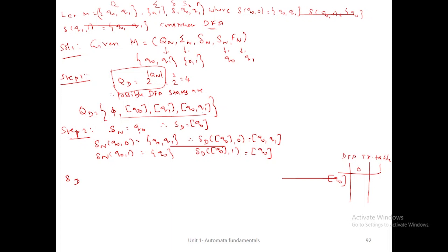In step 2, the starting state of NFA is q0, which is already given as the fourth parameter of the given NFA. The same thing will be applied for the DFA state, because the starting state of DFA equals the starting state of NFA. But that DFA state should be mentioned within square brackets. So I write the starting state of DFA as [q0]. Now, what is the transition flow of those starting states in NFA? We should write it from the given question.